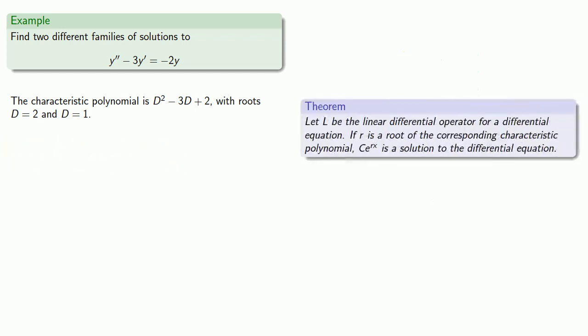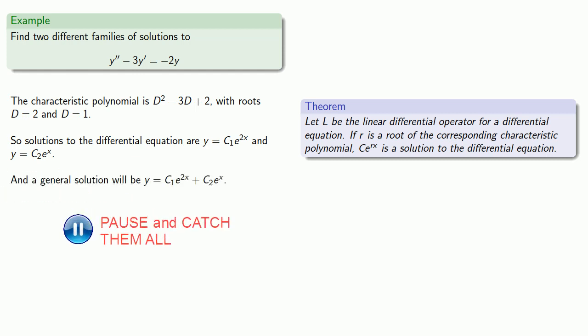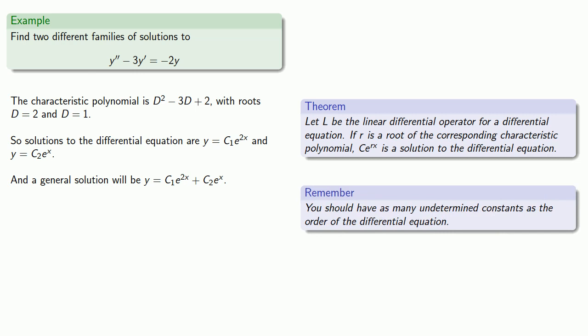Our theorem says each root corresponds to a solution of the form e to the power RX. So the solutions to the differential equation are Y equals C1 e to the power 2x and Y equals C2 e to the power x. A general solution is a linear combination of these. A useful check: you should have as many undetermined constants as the order of the differential equation. This is a second order equation, so we have two undetermined constants, C1 and C2.